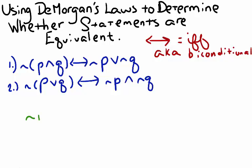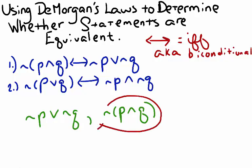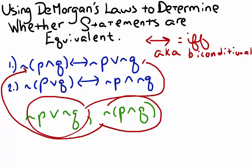Suppose we're given the statement the negation of P or the negation of Q, and the statement the negation of P and Q. Are these statements equivalent? If we look at DeMorgan's first law, we can see that they are. The negation of P and Q corresponds to the first piece in DeMorgan's Law, and the negation of P or the negation of Q corresponds to the second part. Therefore, the negation of P or the negation of Q is equivalent to the negation of P and Q.